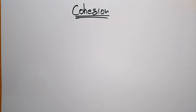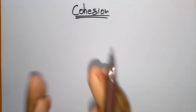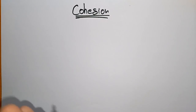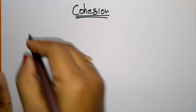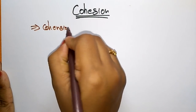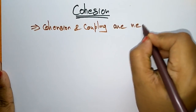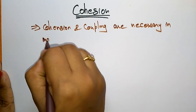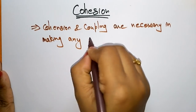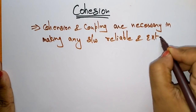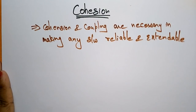Coming to the next topic: cohesion and coupling. These are two important concepts in software engineering. Both of them are necessary in making any software reliable and extensible — whatever software you are going to develop should be reliable and extendable.